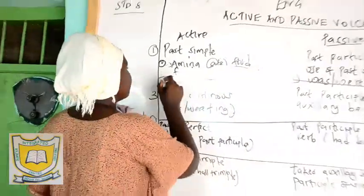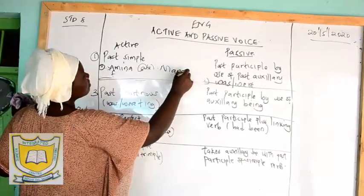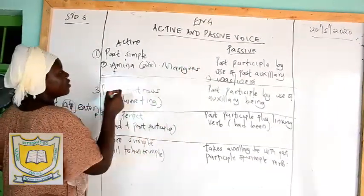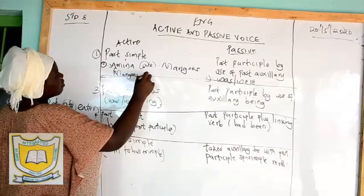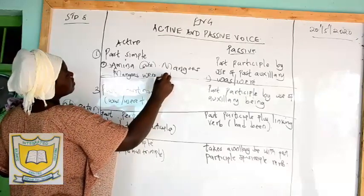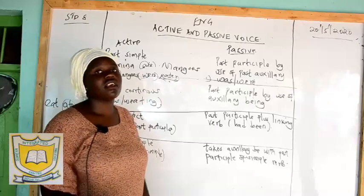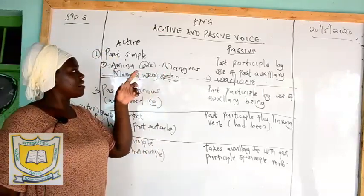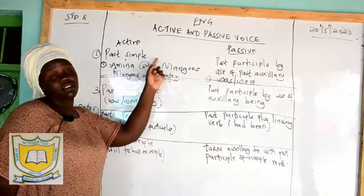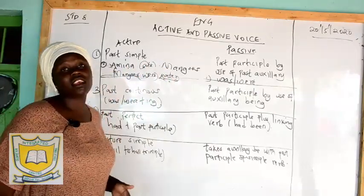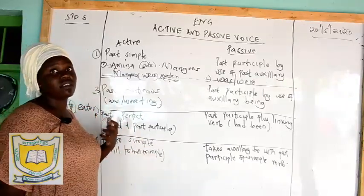For example, you can say: Amina ate mangoes. Mangoes is plural, so in my passive voice I'm going to say: mangoes were eaten. I'm having 'were' plus 'eaten' in my sentence. If the receiver of the action is plural it takes the plural auxiliary 'were', and if the receiver of the action is singular, like in our first sentence — Amina ate food — then we say: food was eaten. 'Was' is the past auxiliary, singular.